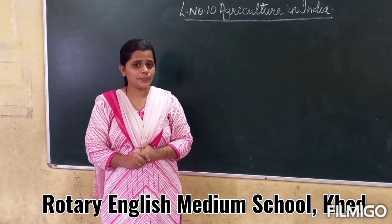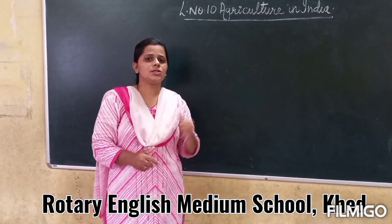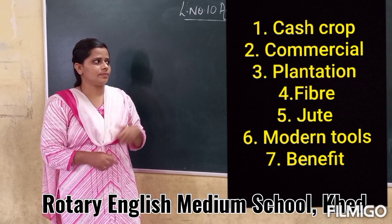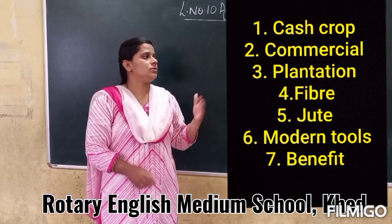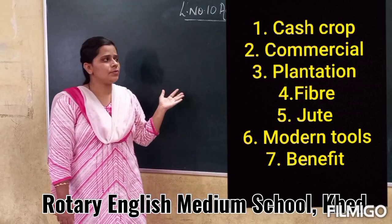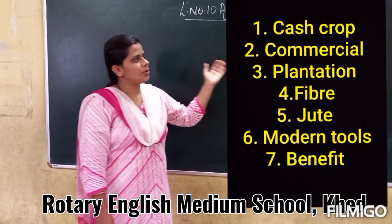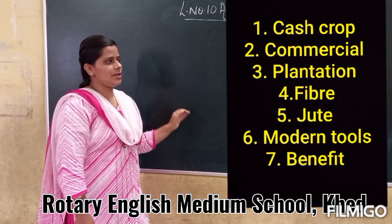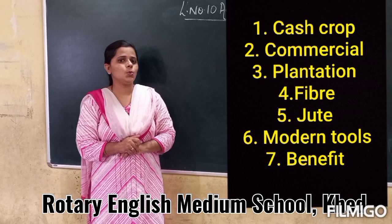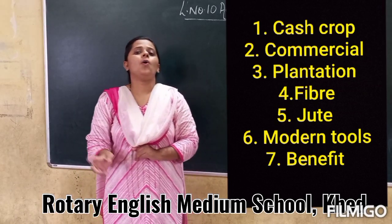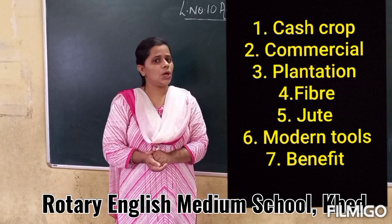Read the textbook and learn the new words. Today's new words are: cash crop, commercial, plantation, fiber, jute, modern tools, and benefits. Watch the video again to learn all the new words and understand all the concepts. In the next video, we are going to discuss the textual objectives and questions. Thank you.